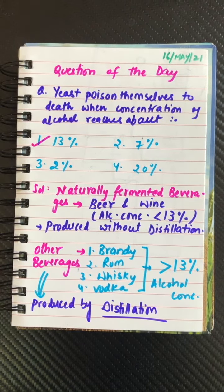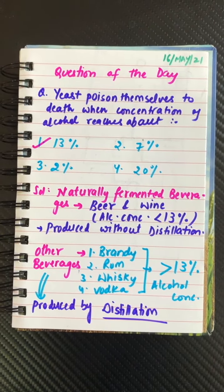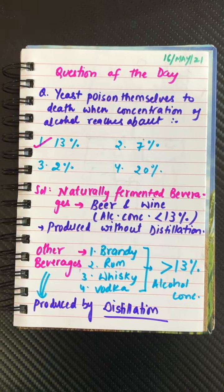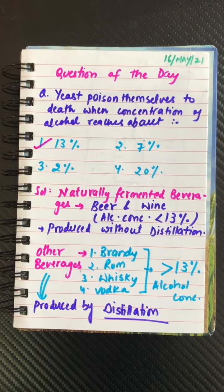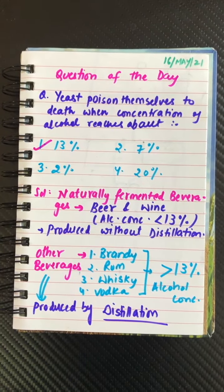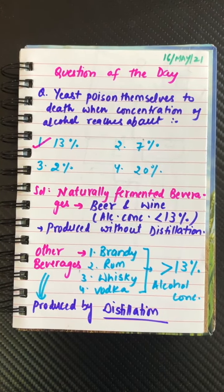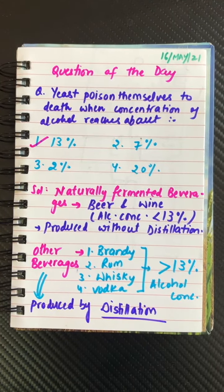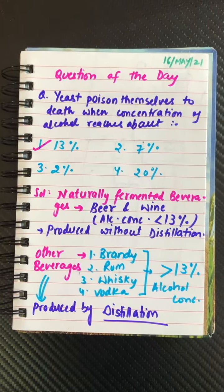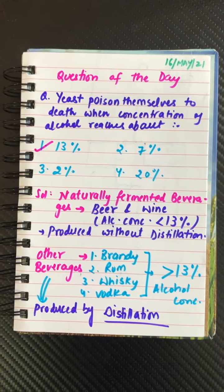Without distillation, beer and wine are less than 13%, and other beverages like brandy, rum, and whisky are made from distillation and they are more than 13%. So the answer will be 13% — the first option. All the very best and thank you so much for watching.